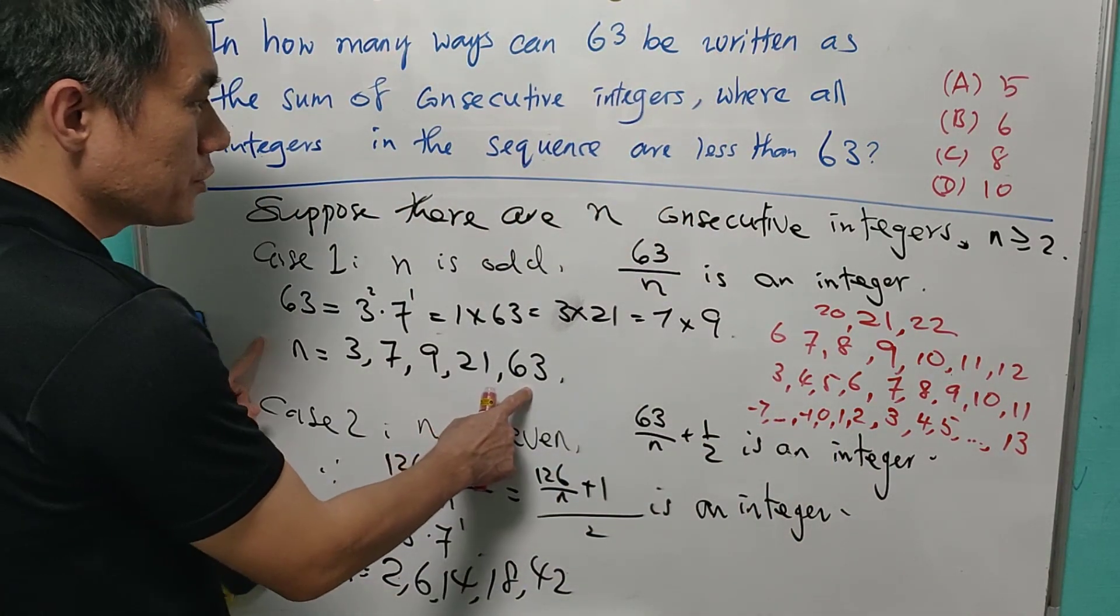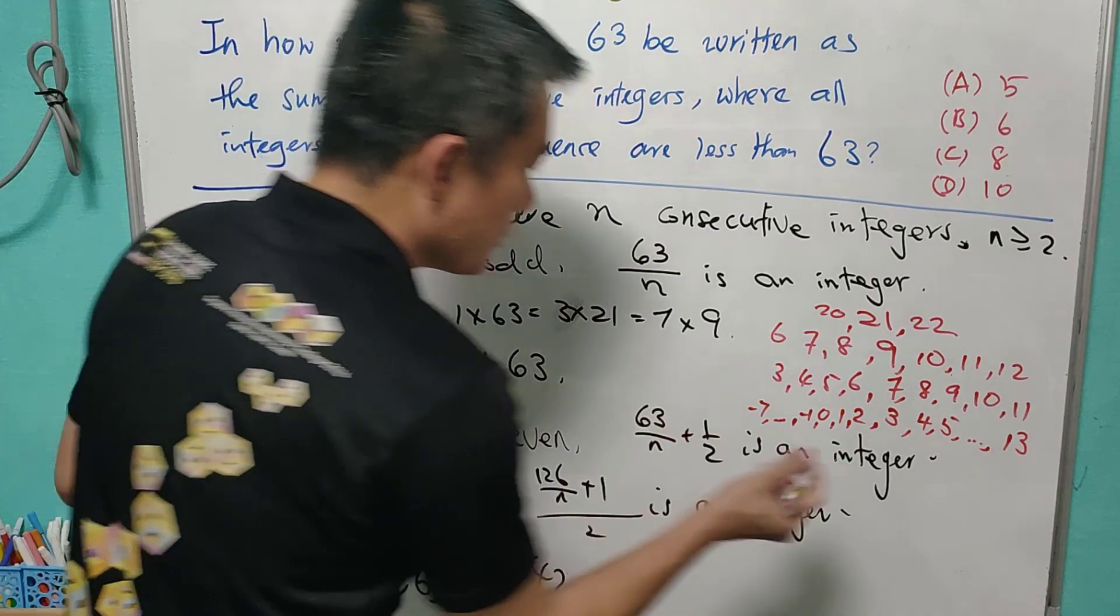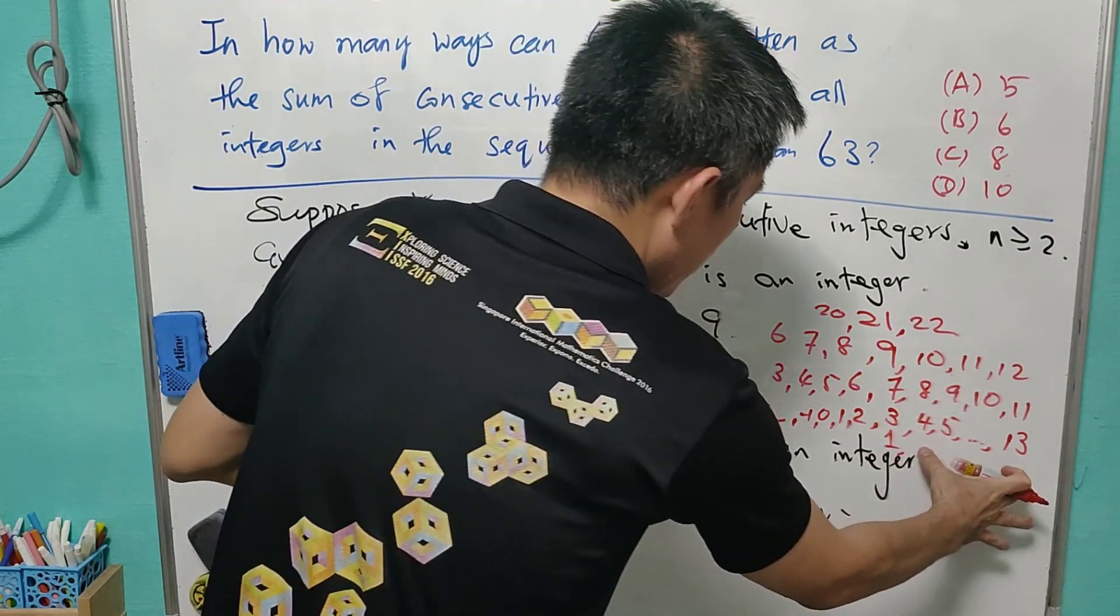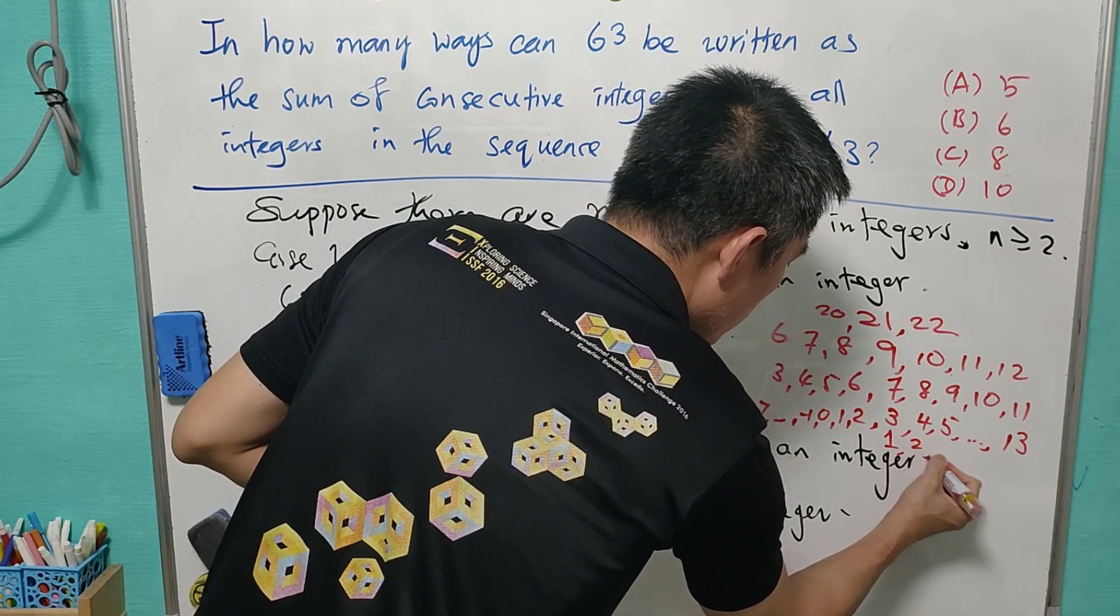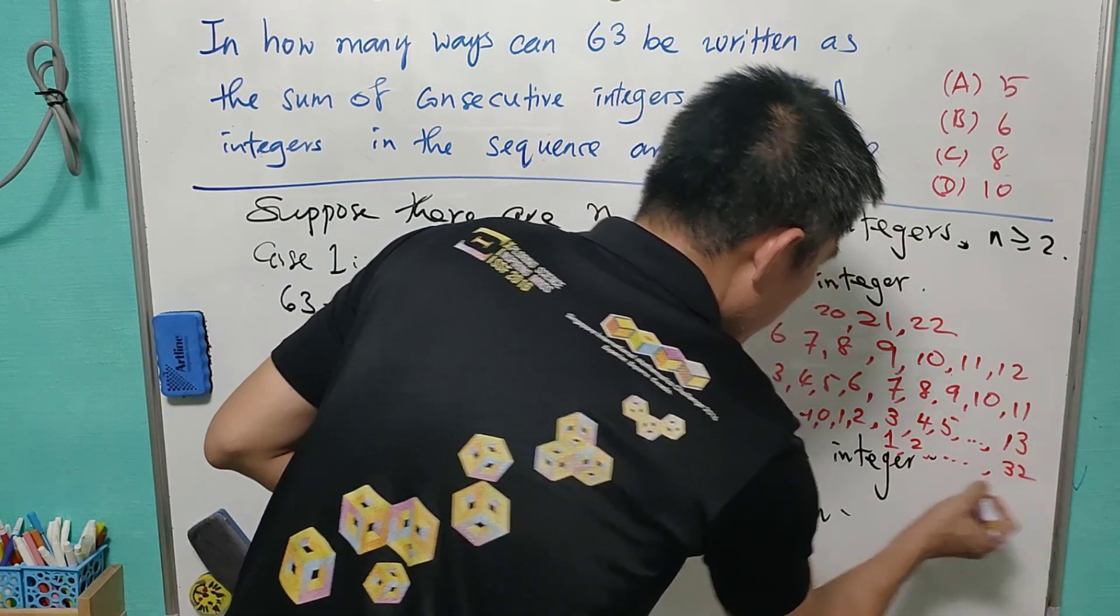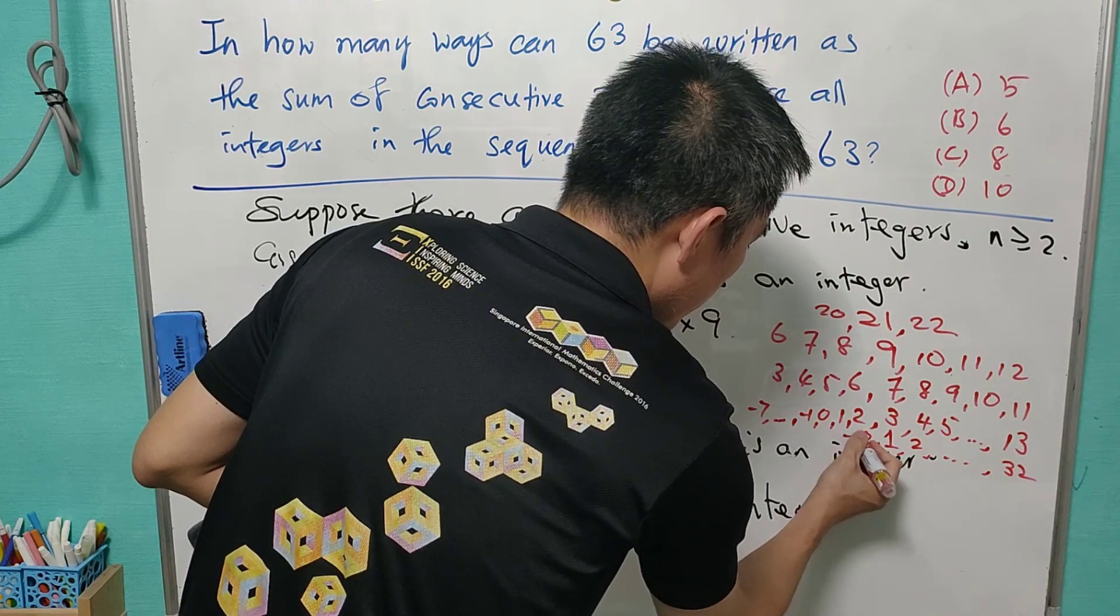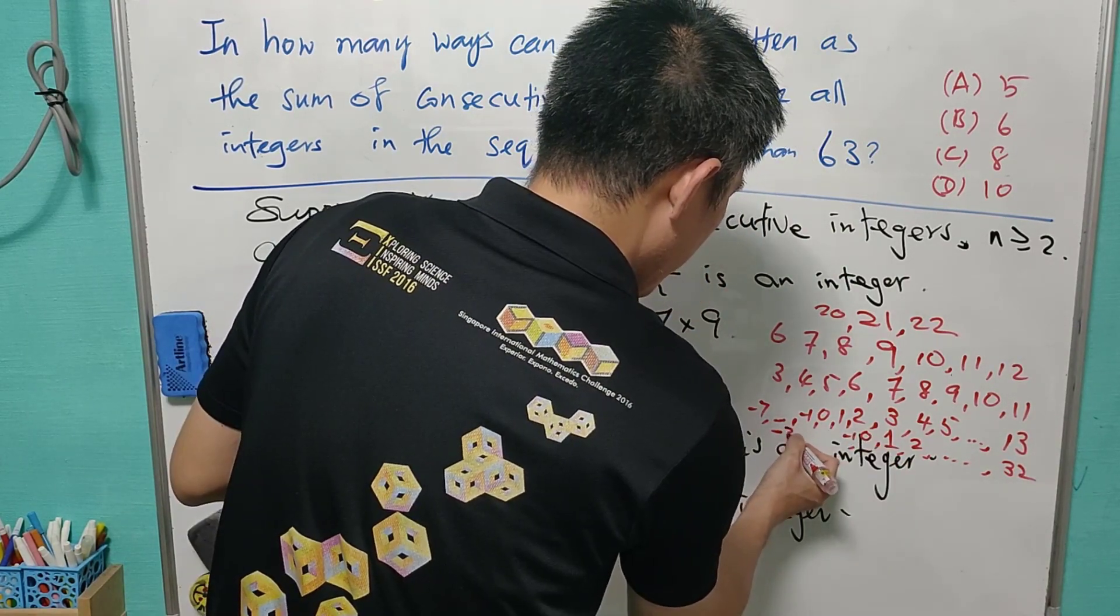And when n equals to 63, the average is equal to 1. We have 31 numbers here and 31 numbers here. And it will be equal to 2 all the way to 32. And this is 0, negative 1, until negative 30.